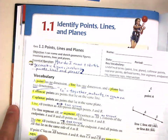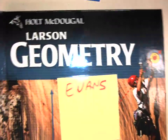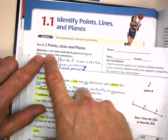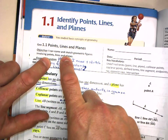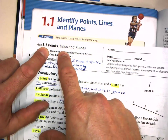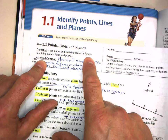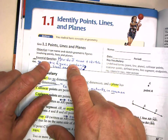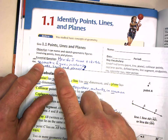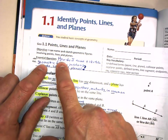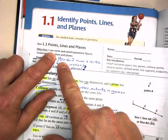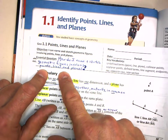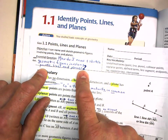Welcome to Geometry section 1.1 from your Larson textbook. Make sure you have your notes and book open. We have an objective for section 1.1 — Points, Lines, and Planes. Our objective is to name and sketch geometric figures involving points, lines, and planes. Turn that objective into an essential question: How do I name and sketch geometric figures involving points, lines, and planes?